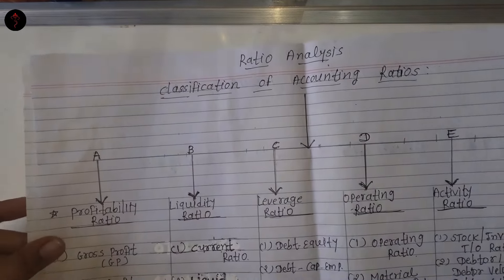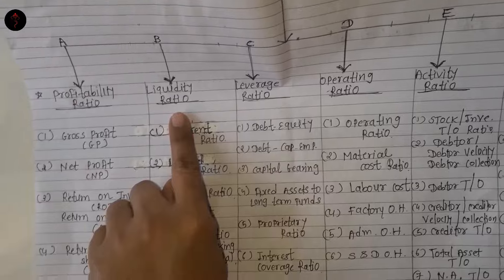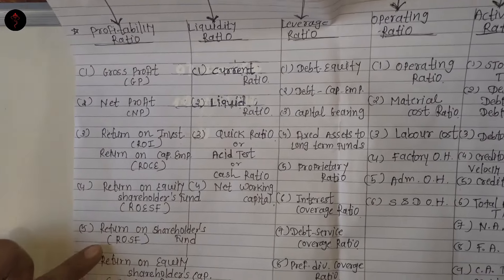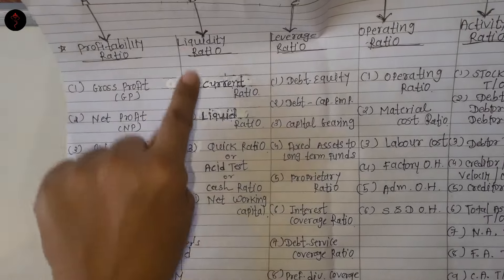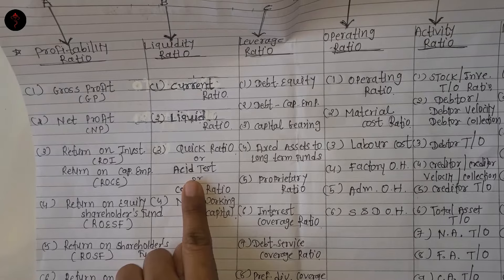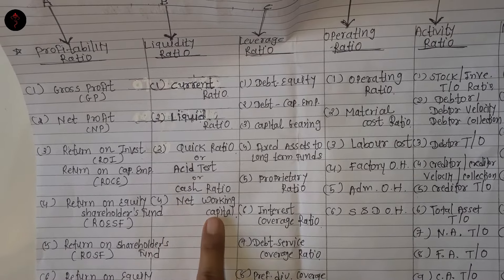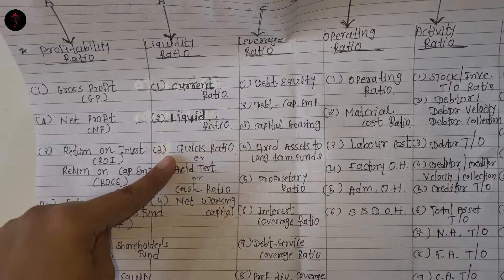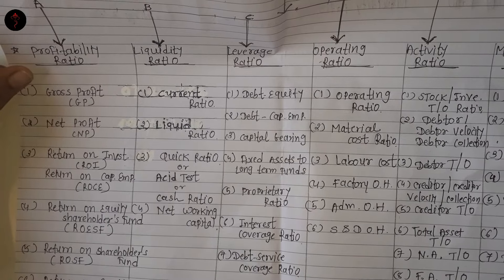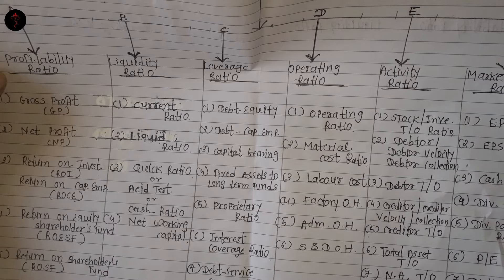तो हमारे classification of ratios में, आज के lecture में हम सिर्फ दो category of ratios पढ़े — profitability ratio and liquidity ratio. Profitability ratio में six ratios: GP, NP, ROI, return on equity, return on shareholders, return on equity share capital. Liquidity ratio में: current, liquid, quick, and net working capital. Current जितना ज़्यादा, liquid जितना ज़्यादा, quick जितना ज़्यादा — उतना हमारे business के लिए अच्छा होता है, because most firms have only one problem — that is cash, cash हाथ में न होना यह बहुत बड़ी problem है.